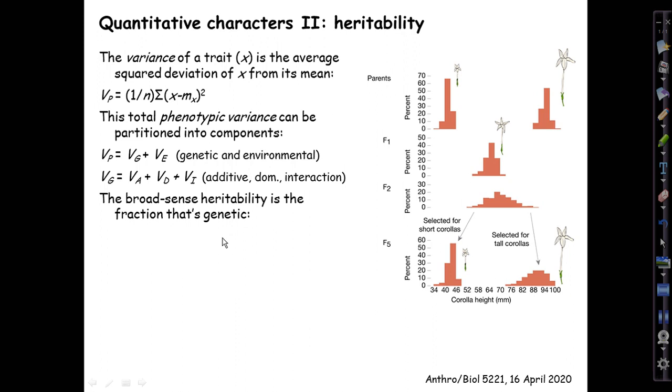Then the broad-sense heritability is defined as the fraction that's genetic in all these senses. It's just V_G over V_P, the fraction of the total phenotypic variance that is determined by genes. It's capital H² the traditional way of denoting it, the broad-sense heritability.